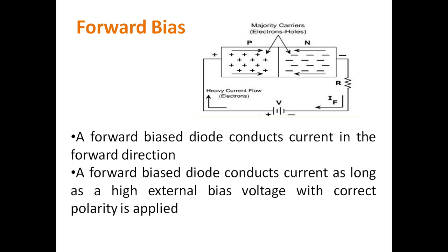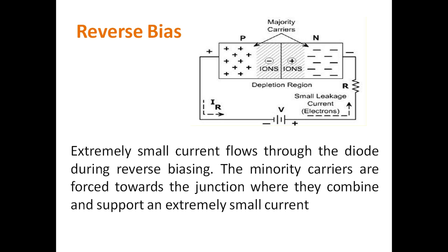The majority carriers in the N-layer are electrons. For reverse bias, the anode terminal of the diode is connected to the negative terminal of the battery and the cathode is connected to the positive terminal. Under reverse bias, the width of the depletion region increases.